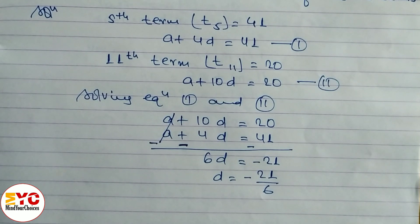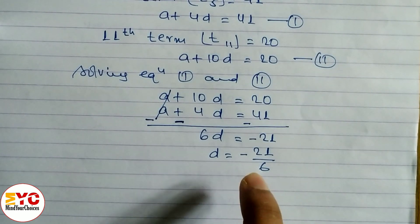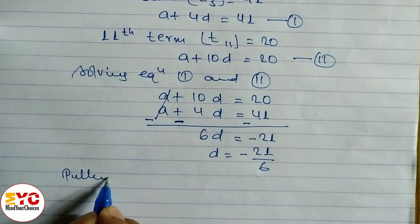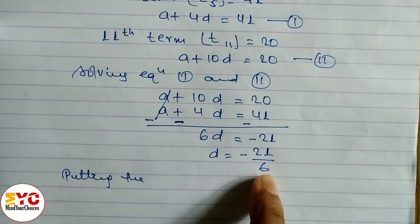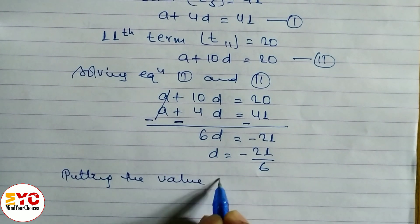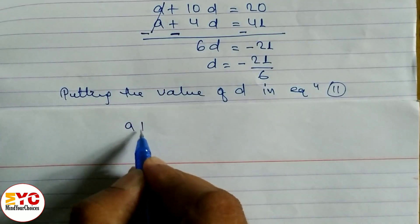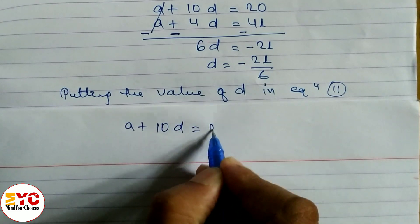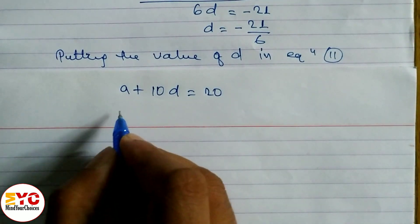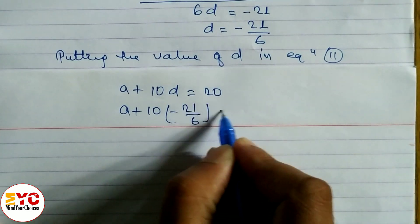After finding D, we put the value of D either in equation 1 or equation 2 to get the value of A. Putting the value of D in equation 2: A plus 10D equals 20. So A plus 10 into (minus 21 by 6) equals 20.